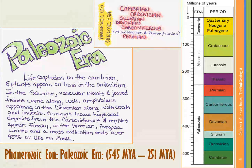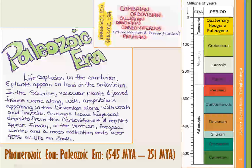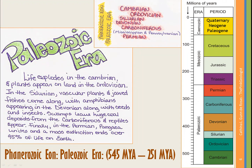To summarize the Paleozoic Era: life exploded in the Cambrian; plants came onto land in the Ordovician; vascular plants appeared in the Silurian; jawed fish and amphibians appeared in the Devonian along with seed-bearing plants; the Carboniferous brought coal swamps and the first reptiles; and in the Permian, Pangaea united. That Permian-Triassic boundary, marked by the third major extinction event when so much life was wiped out, is one of the most significant events in geology.